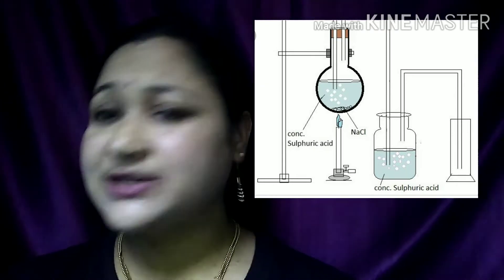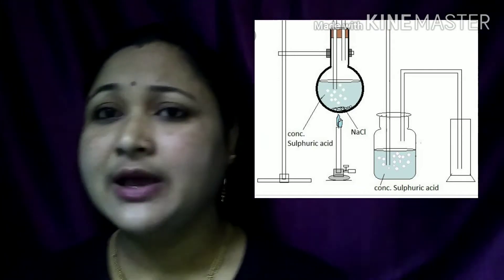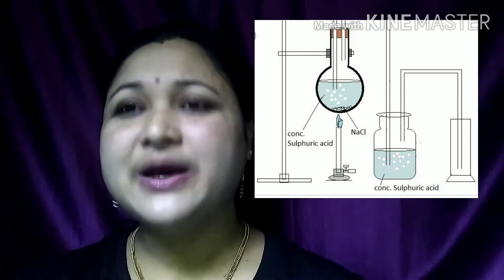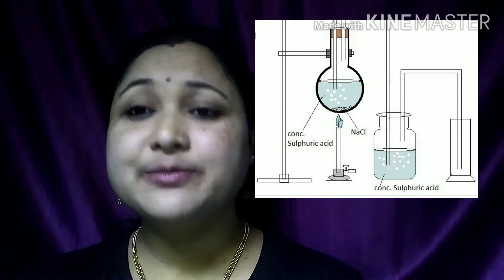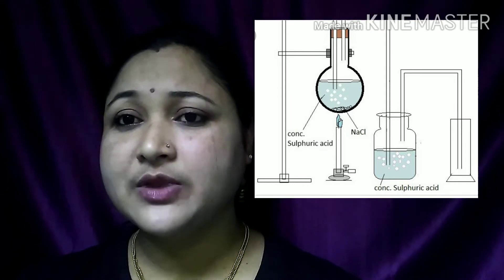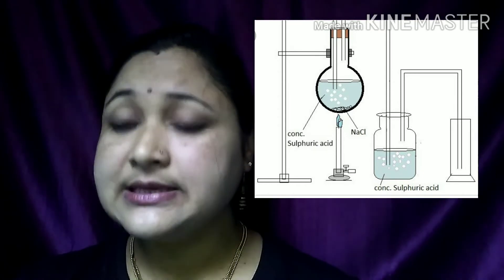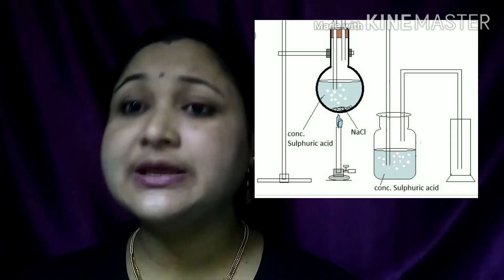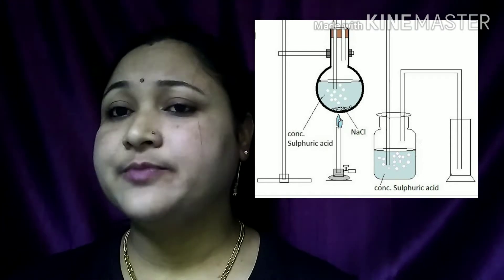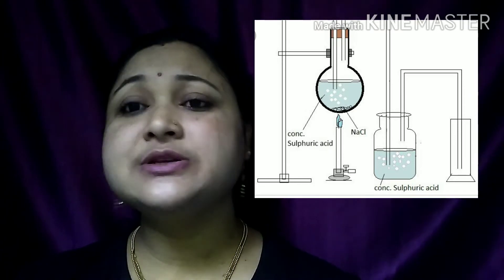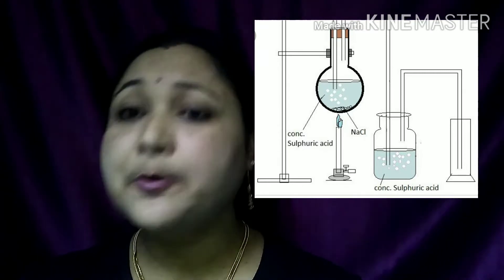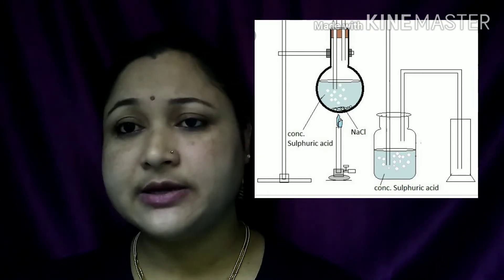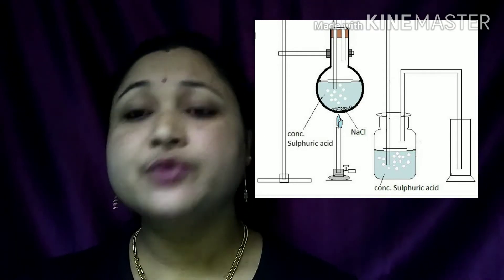The hydrogen chloride gas first passes through a flask containing concentrated sulfuric acid to absorb any water vapors. It is then delivered through another tube into a large glass jar containing air. Since hydrogen chloride gas is denser and heavier than air, it displaces the air from the jar and is collected by upward displacement of air.